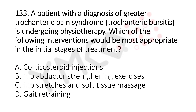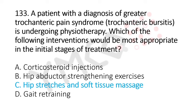Now let's move to question number 133. A patient with a diagnosis of greater trochanteric pain syndrome, that's trochanteric bursitis, is undergoing physiotherapy. Which of the following interventions would be the most appropriate in initial stages of treatment? Option A: corticosteroid injection. Option B: hip abductor strengthening exercises. Option C: hip stretches and soft tissue massage. Option D: gait retraining. The answer is option C: hip stretches and soft tissue massage.